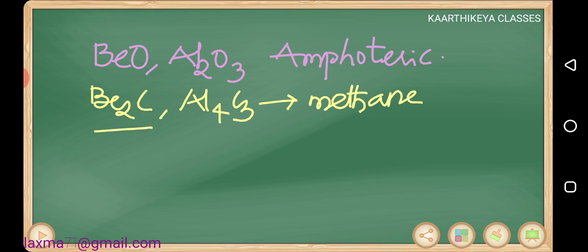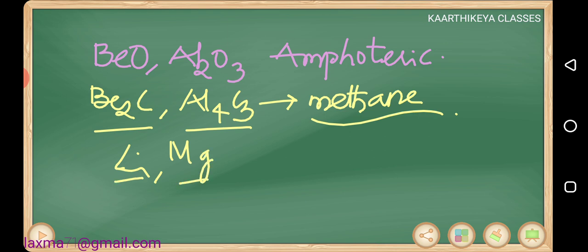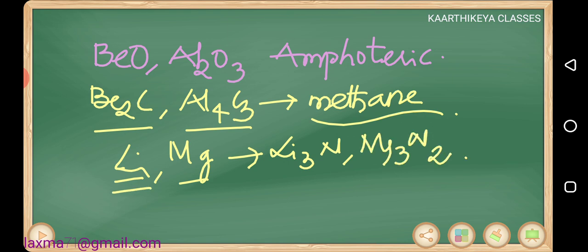Beryllium carbide and aluminium carbide give methane on hydrolysis. For lithium and magnesium combinations: both directly react with nitrogen to form nitrides — Li₃N and Mg₃N₂ (magnesium nitride). Sodium cannot do this, but magnesium will. This is the kind of similarity between lithium and magnesium, and similar similarities exist between boron and silicon. This is called diagonal relationship.